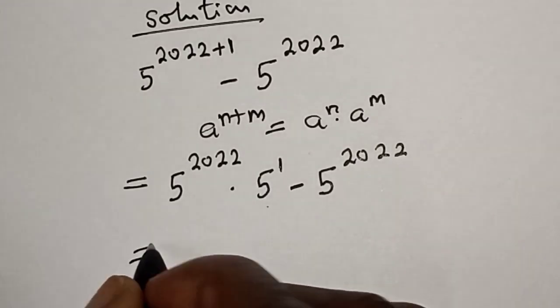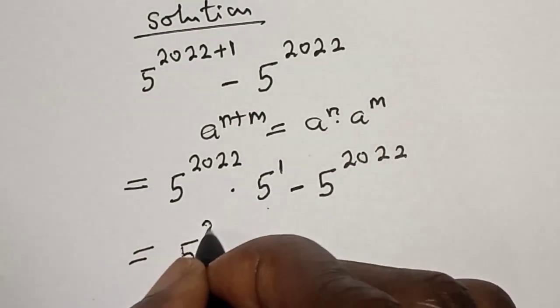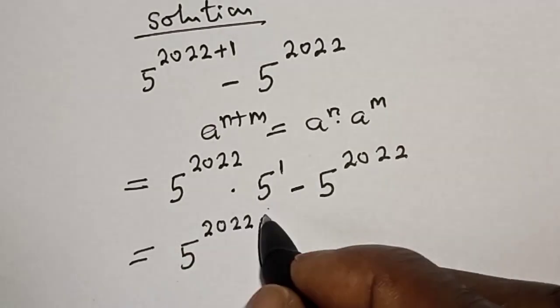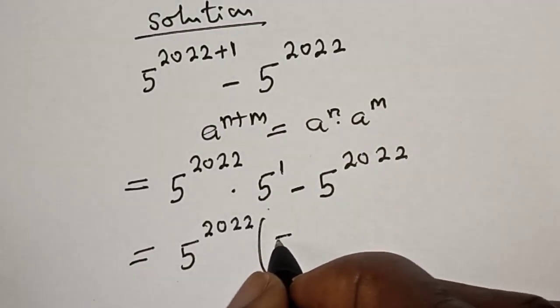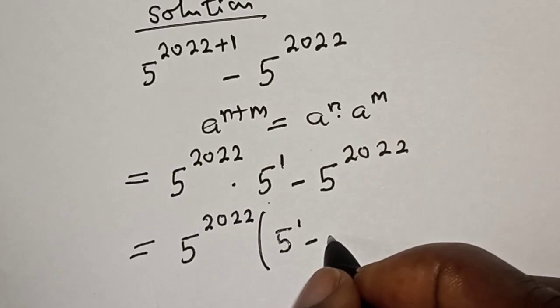And this is equal to 5 raised to power 2022 is common. Let's bring it out. This is equal to 5 raised to power 2022, bracket, 5 raised to power 1 minus 1.